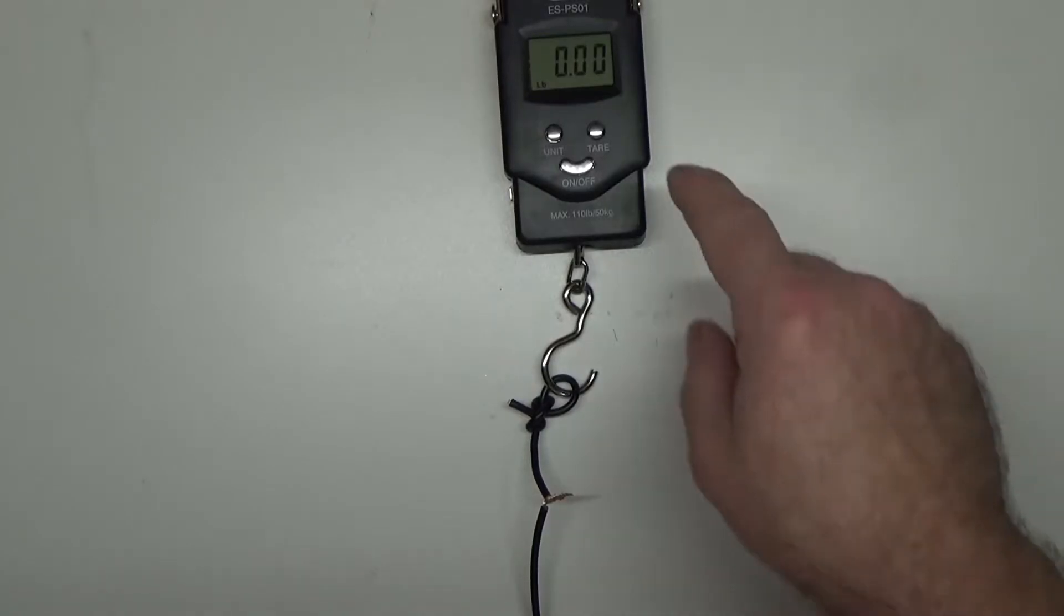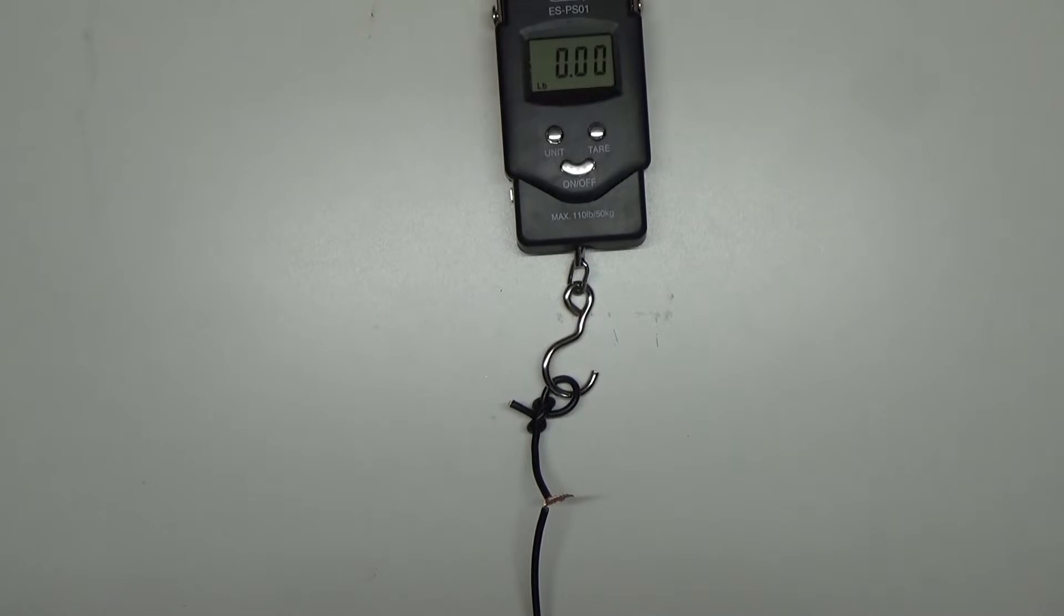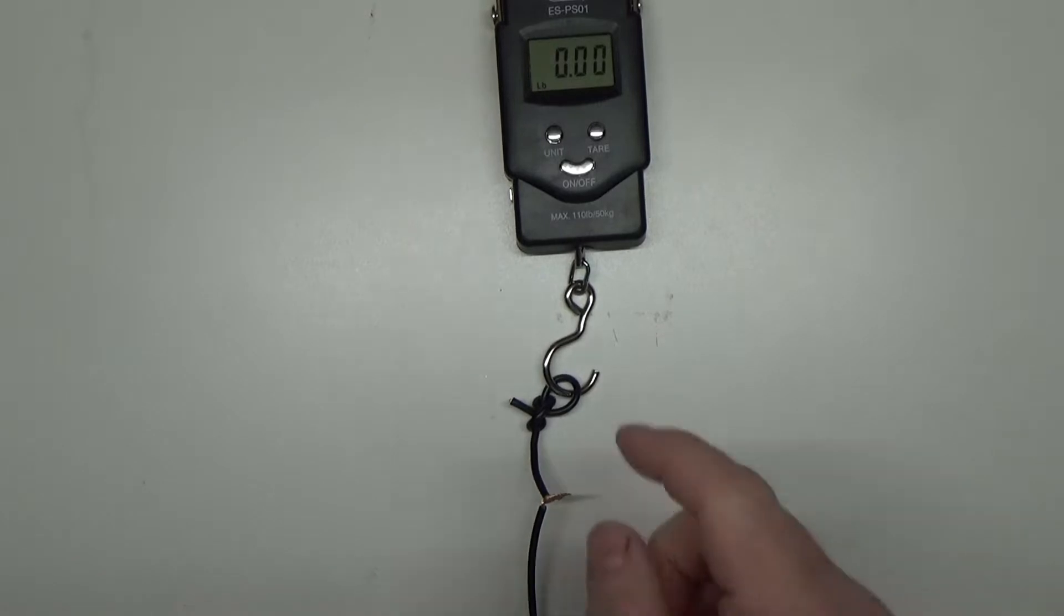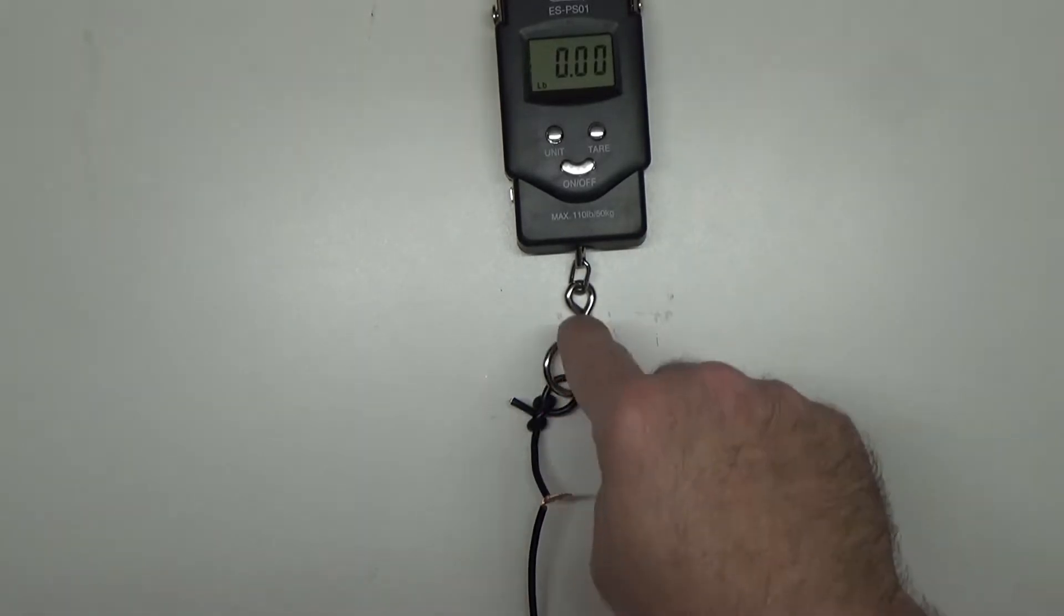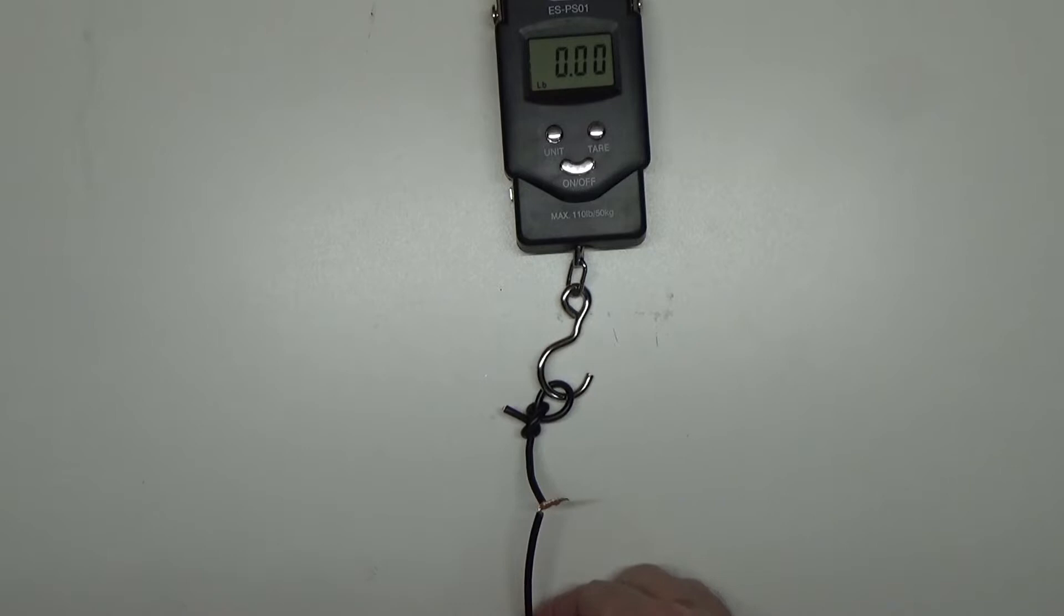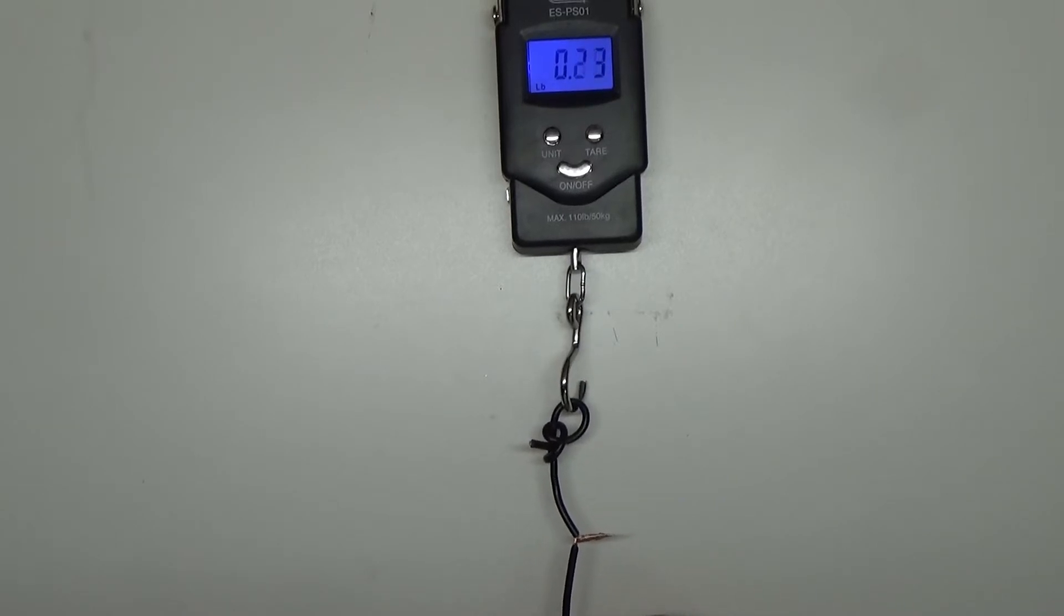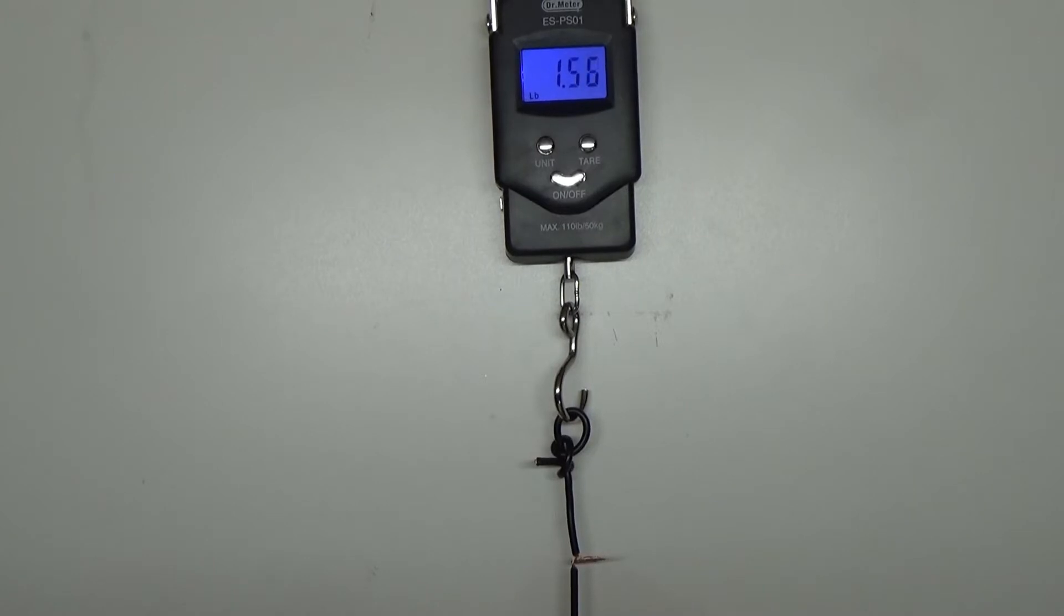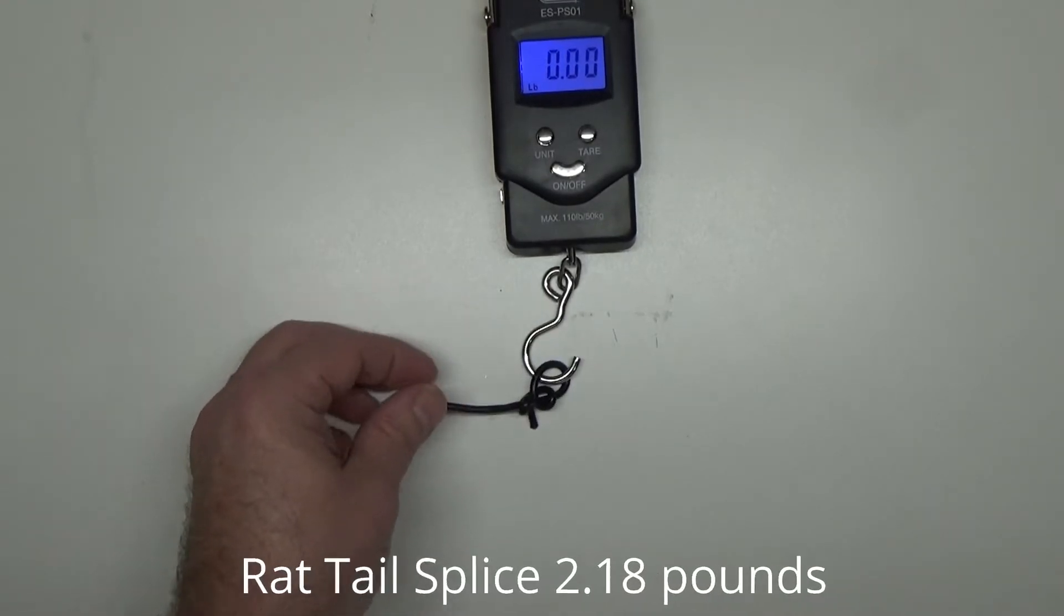What we've got rigged up here, I've got my scale tied to the top of my table here, got the wire tied to the hook. This measures in pounds. As I pull this wire, we're going to see how many pounds it takes before that wire turns loose. So this is the rat tail splice, how much does it take to pull it apart? We hit a pound. It's coming apart. Right about two pounds is where it starts separating. So about two pounds of force will separate a rat tail splice.